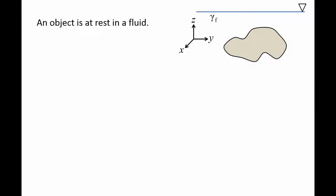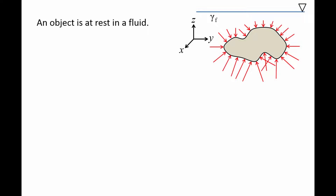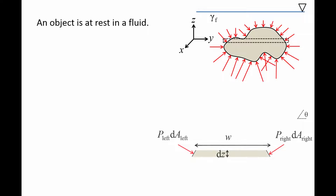We start by examining an object of arbitrary shape that is at rest in a fluid with specific weight gamma f. The fluid pressure exerts a force on the entire surface of the object. This force acts normal to the surface and increases with depth. Let's examine the pressure force acting on a very thin horizontal sliver of the object. The sliver has a width w and height dz.